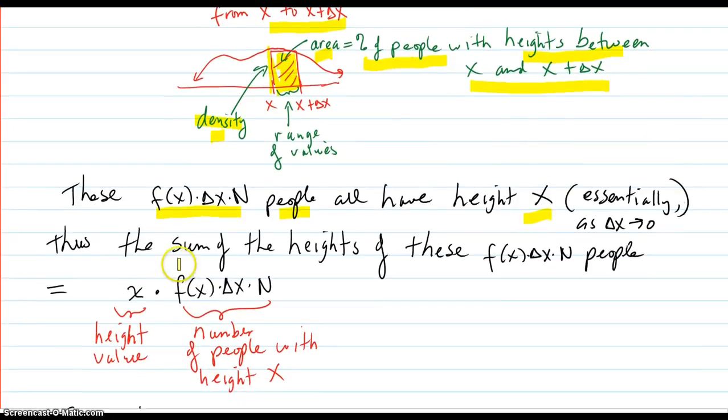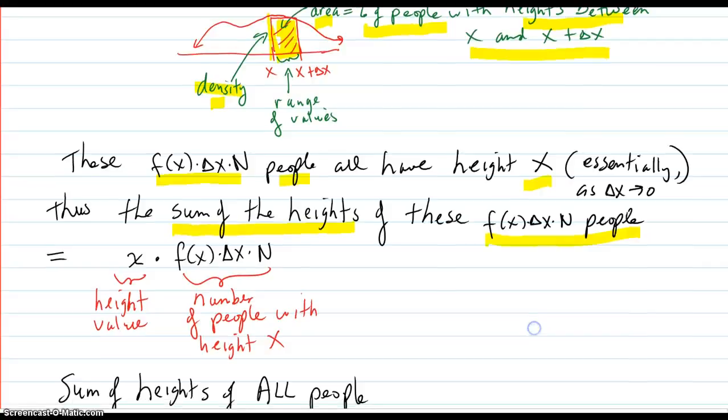So if you want the sum of all the heights of those people between x and x plus delta x, you'll have the height value times the number of people with that height value. Now I'll give you the sum of all the heights.